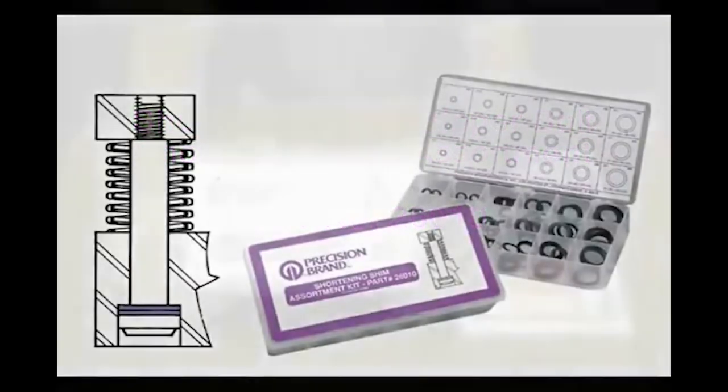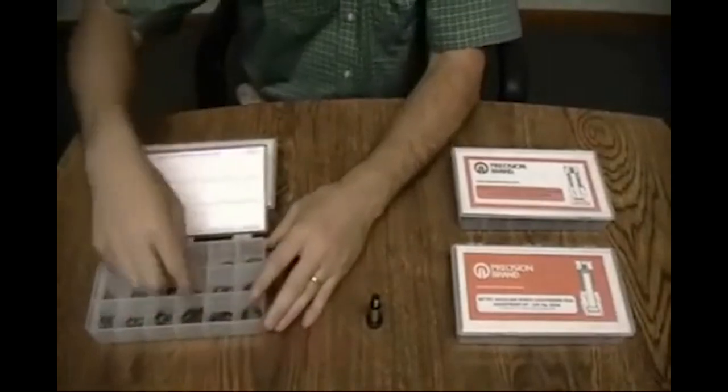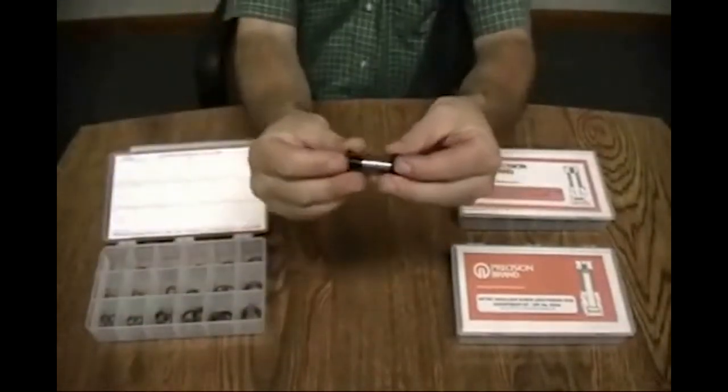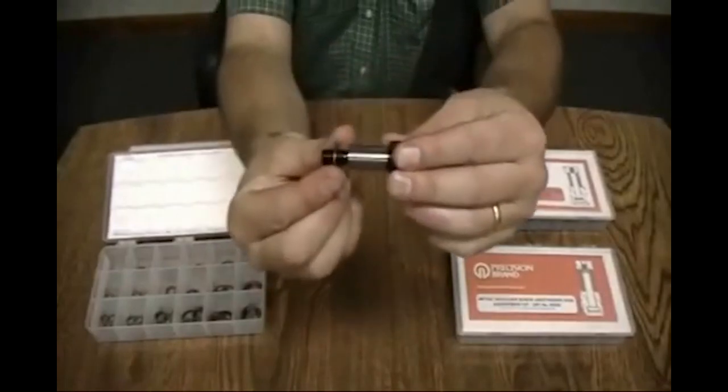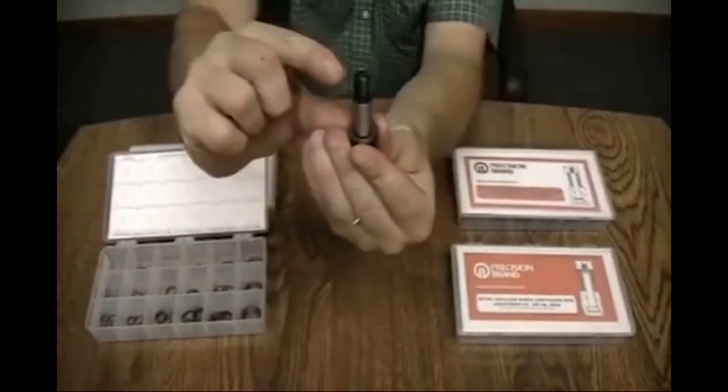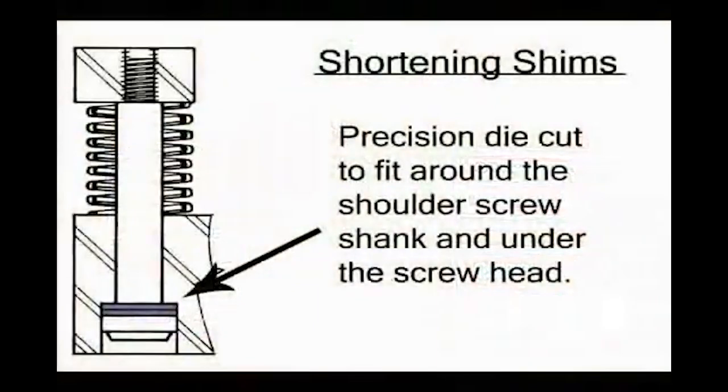If you are looking to make a standard length screw shaft a little shorter, first identify which diameter shim you will need and then choose the appropriate thickness from the three available. Simply slide the shim over the shaft until it rests against the underside of the head and you have, in essence, shortened the shaft by the amount of the shim thickness.